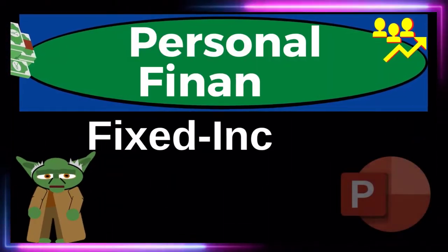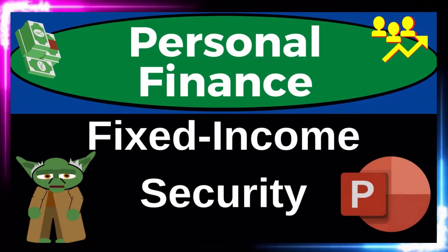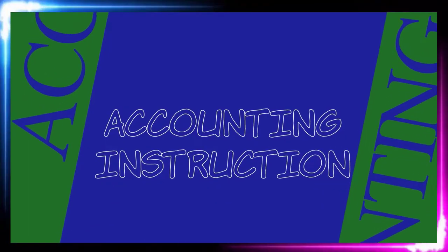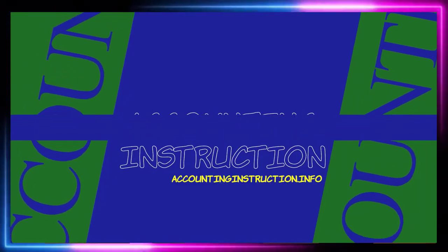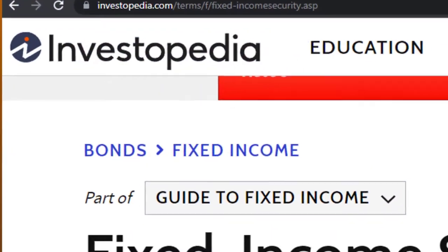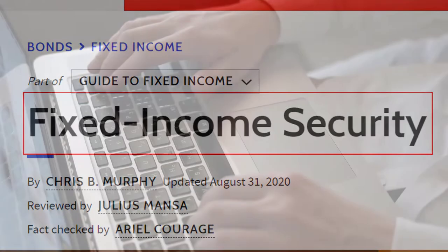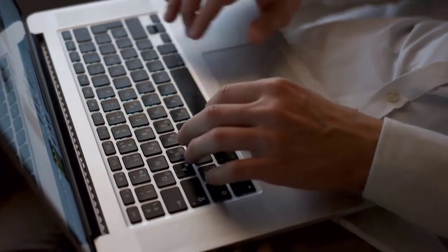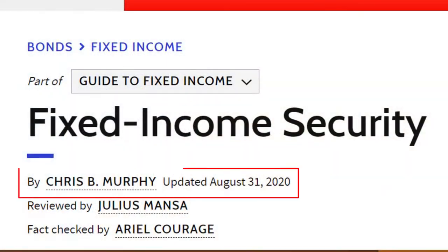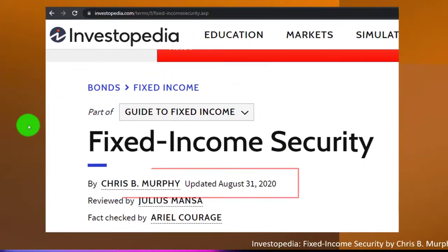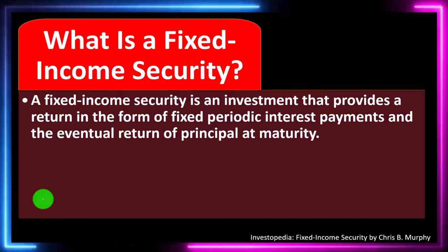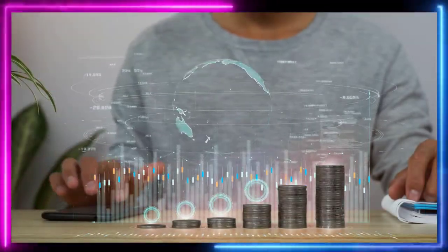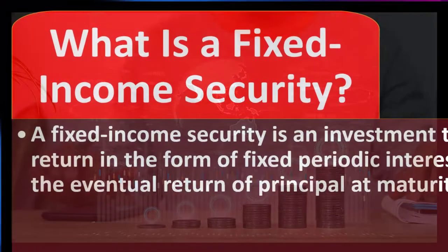Personal finance PowerPoint presentation: fixed income security. Prepare to get financially fit by practicing personal finance. Most of this information comes from Investopedia's fixed income security article, which you can find online — take a look at the references to continue your research. This is by Chris M. Murphy, updated August 31st, 2020. In prior presentations we've been looking at investment goals, investment strategies, and investment tools. Keeping those in mind, we're now asking: what is a fixed income security?